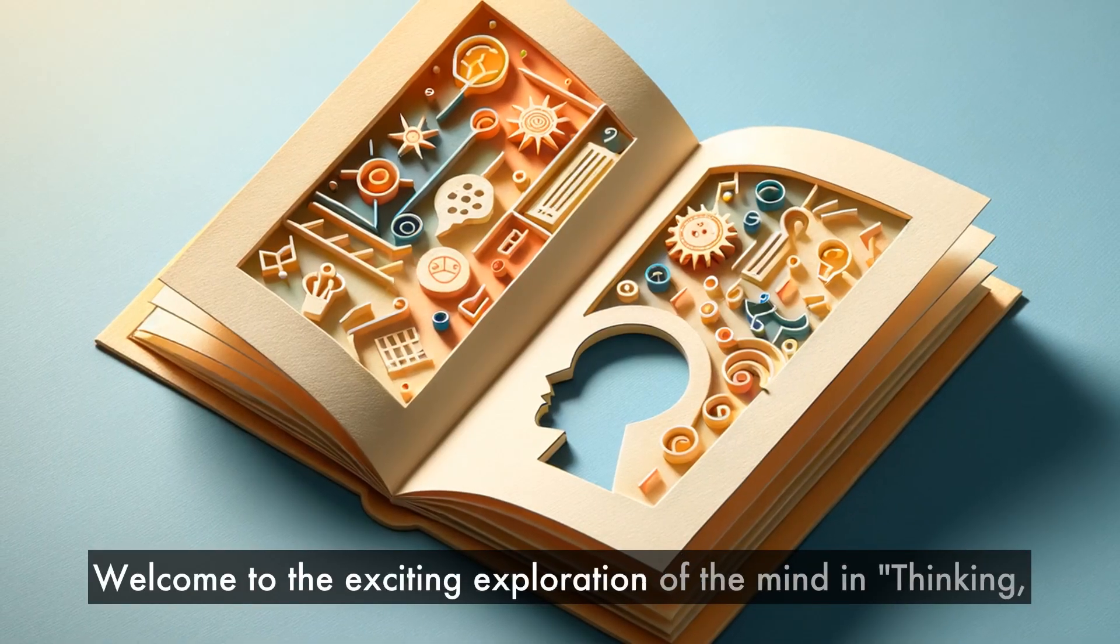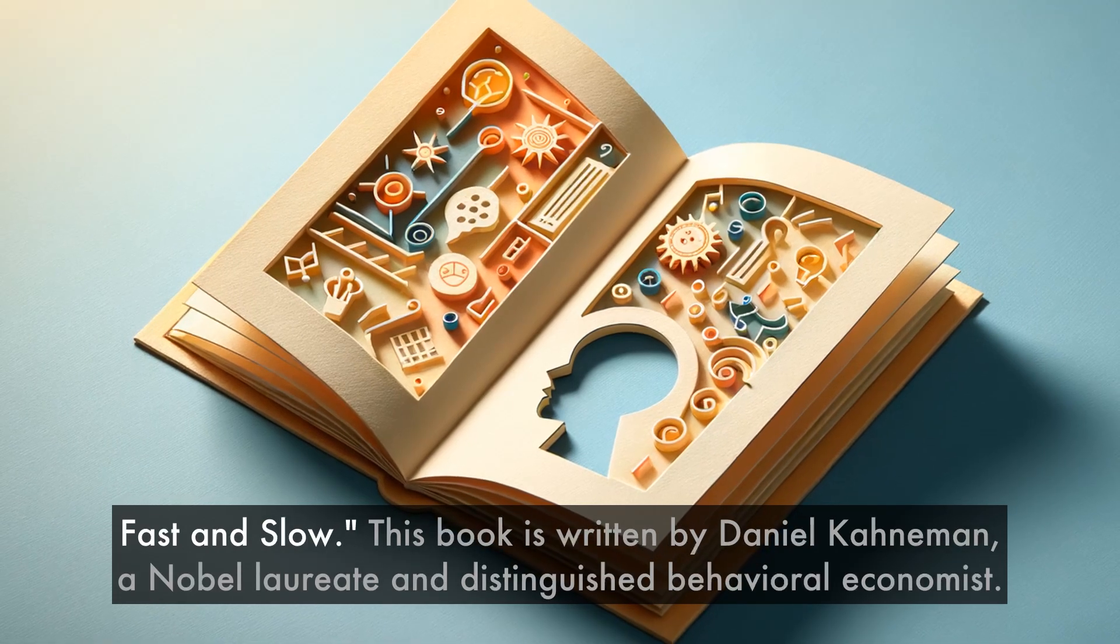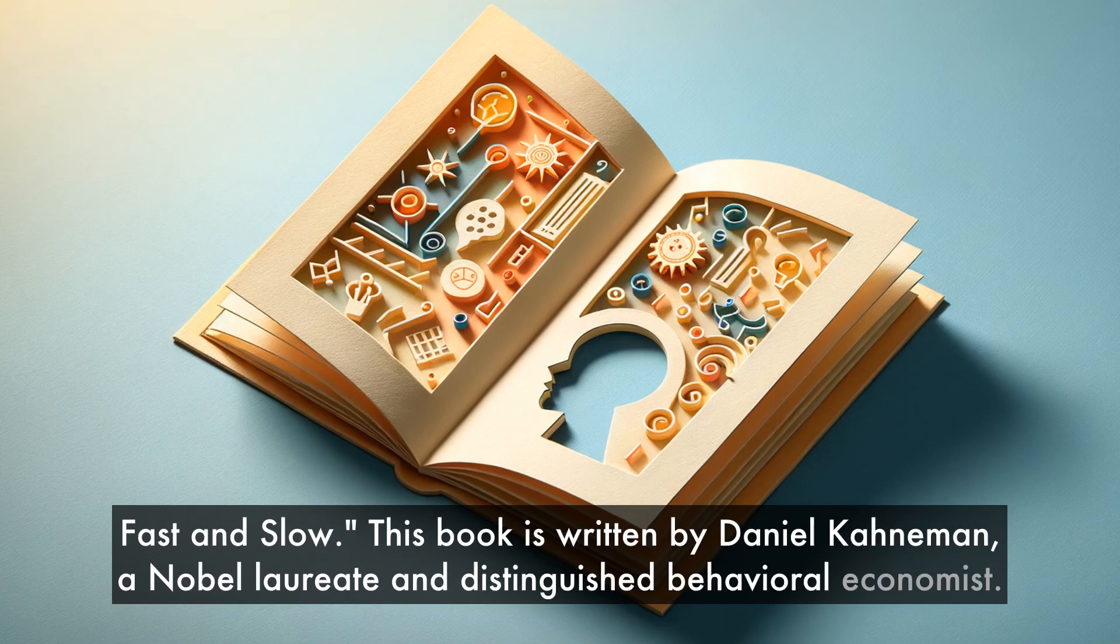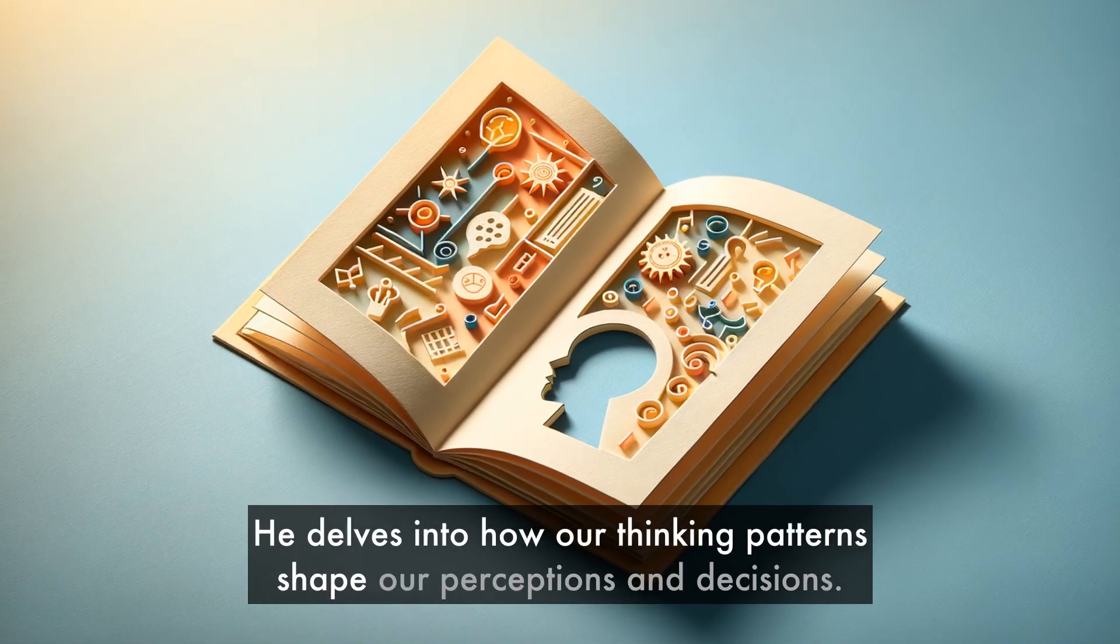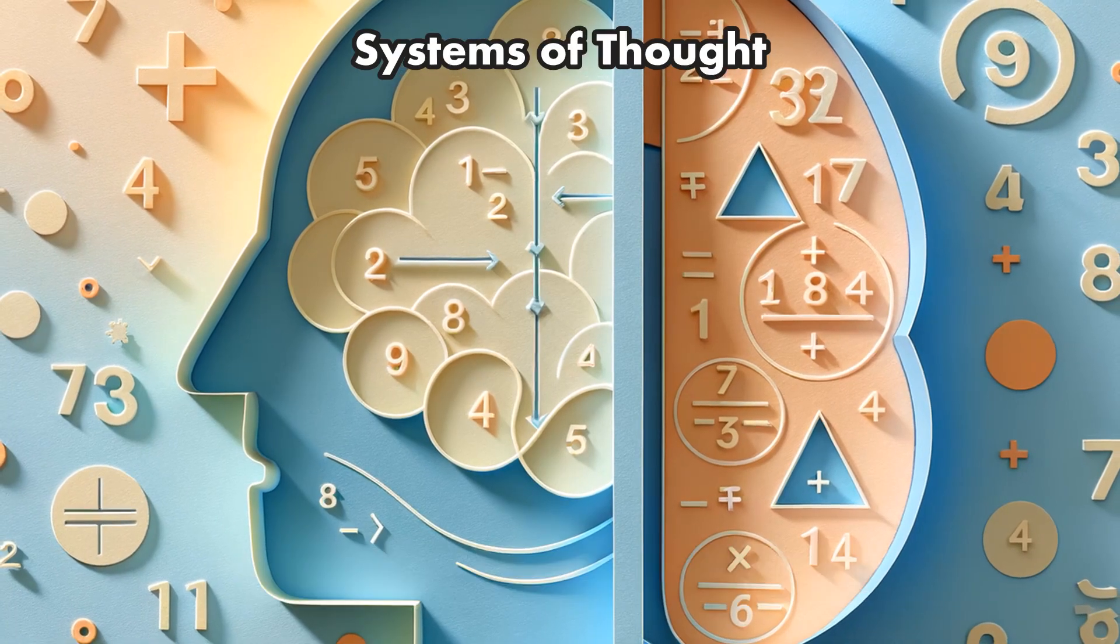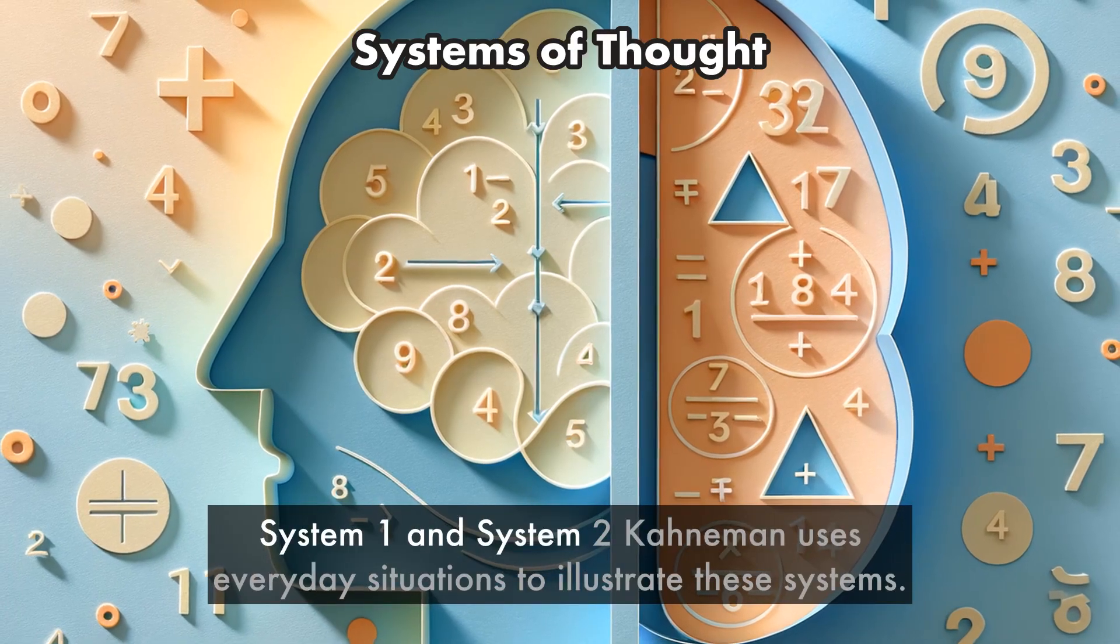Welcome to the exciting exploration of the mind in Thinking Fast and Slow. This book is written by Daniel Kahneman, a Nobel laureate and distinguished behavioral economist. He delves into how our thinking patterns shape our perceptions and decisions. Today, we take a journey into your mind. We'll be identifying its key operators, system 1 and system 2.